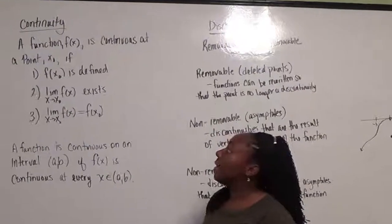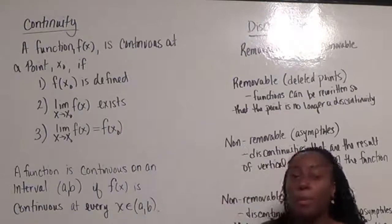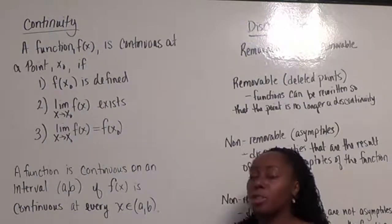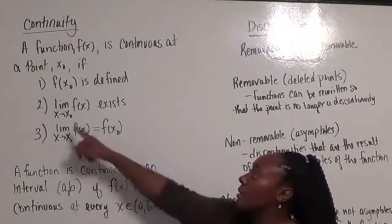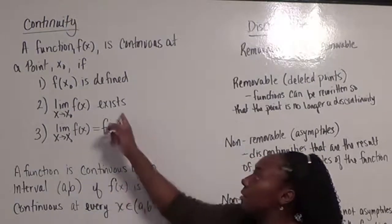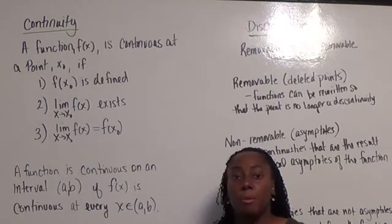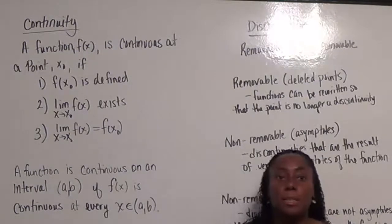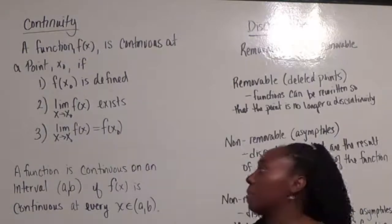A function f of x is continuous at a point x0 if three conditions hold. The first condition is that the function f of x is defined at the point x0. The second condition is that the limit as x goes to x0 of f of x exists. What we mean by that is, going back to our one-sided and two-sided limits, the two one-sided limits are equivalent, and they are the same as the two-sided limit.